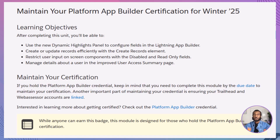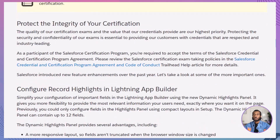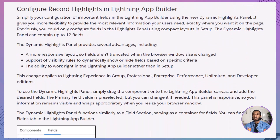First up, the dynamic highlights panel. Previously, if you wanted to display important record details at the top of a Lightning page, you had to rely on compact layouts in Setup. But now, you can configure this directly in the Lightning App Builder using the dynamic highlights panel, giving you more control and a cleaner user experience.